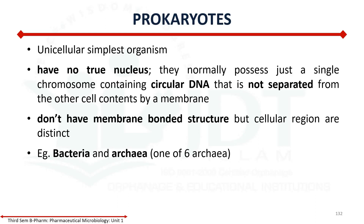Prokaryotics have no true nucleus. If you distinguish based on the nucleus, they are prokaryotics. They normally possess just a single chromosome containing circular DNA that is not separated from other cells by a membrane. They also do not have any membrane-bounded structures.